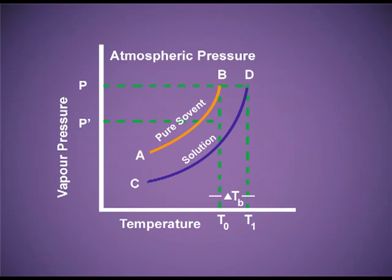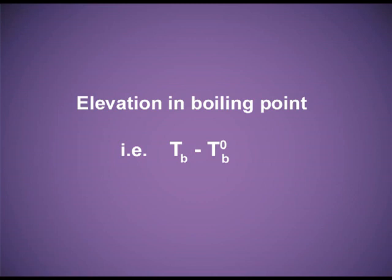So there is an increase in boiling point, and this increase is known as ΔT_B, that is elevation in boiling point. It equals T_B − T°B. Elevation in boiling point is a colligative property because it depends upon the number of solute particles. The more solute we add, the more the vapour pressure lowers, and we have to heat it more to reach atmospheric pressure, giving a higher value of elevation in boiling point.